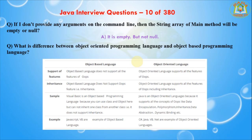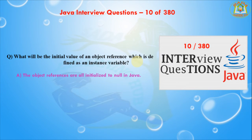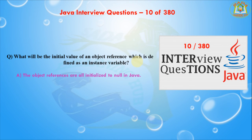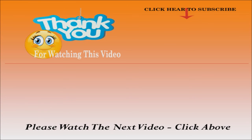Next I am going to discuss about what will be the initial value of an object reference defined as an instance variable. The object reference is initialized to null in Java. Whenever we create an object, Java automatically initializes it with the null value — the object reference is initialized to null. Thank you so much for watching this video. I hope this lesson was helpful to you. Keep watching our lessons, subscribe to our channel Sada Learning Hub, because we have many sessions that would help you develop your skills. I will be back soon — take care, bye bye.